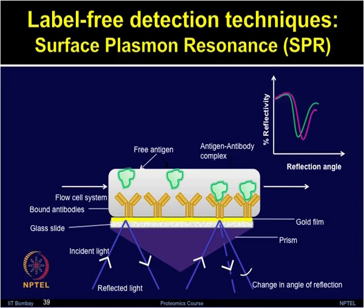Very briefly, let us look at label-free detection techniques, which include surface plasmon resonance (SPR). Label-free detection methods monitor the inherent properties of the molecule itself and overcome many limitations of traditional label-based methodology. Various techniques such as SPR, SPR imaging, ellipsometry, and interferometry are commonly used for label-free detection. Surface plasmon resonance detects any change in the refractive index of the medium at the material interface between a metal surface and the ambient medium.